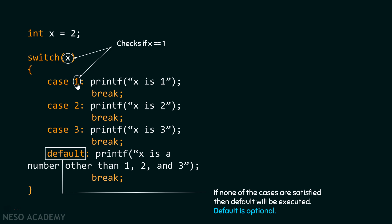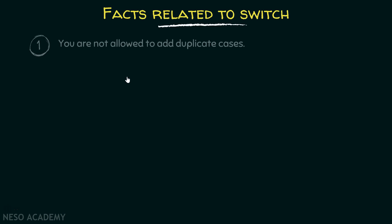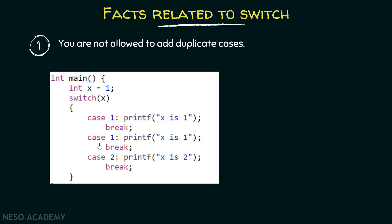Please remember that default is optional — it is not necessary to add a default statement. If x is not equal to one, two, or three, then default gets evaluated and the corresponding printf function gets executed. Now, let's say x is equal to one. This printf function will get evaluated and print 'x is one.' After that, you can see there is a break statement. If there is no break after this printf function, then subsequent expressions will also get evaluated until we reach the next break — even if x is not equal to two. Therefore, it is important to put break after the printf function to exit the switch construct. Note that break is also optional.